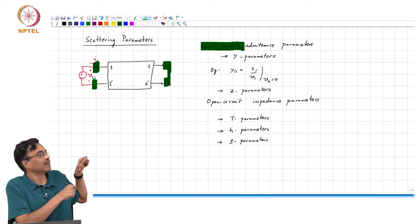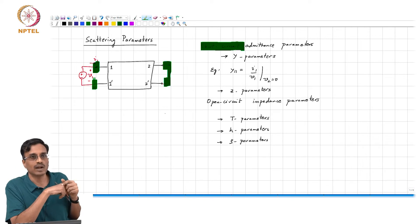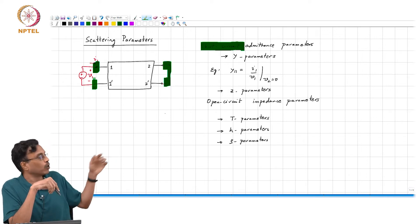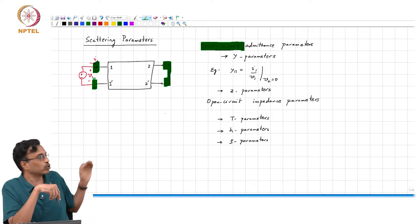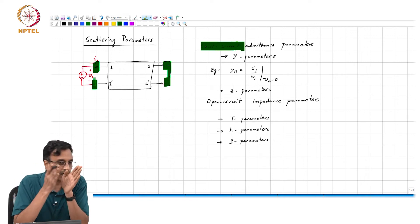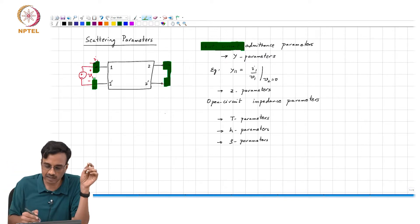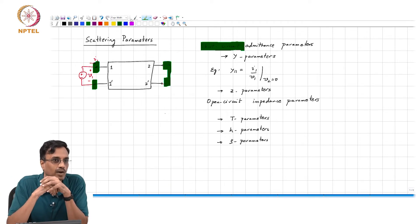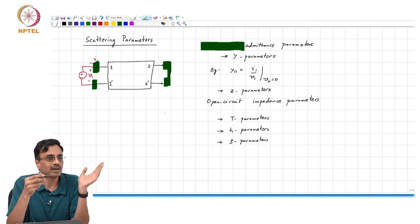If you wanted to measure the y-parameters, what you would have to do in principle is to short circuit port 2 and apply a voltage at port 1. And as far as this diagram is concerned, the voltage has to be applied right at the terminals of port 1. It is not 'I will apply V1 a mile away and hope that the same voltage will appear at the terminals of port 1.'